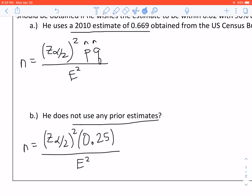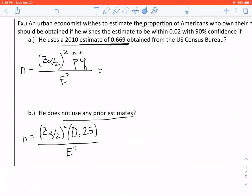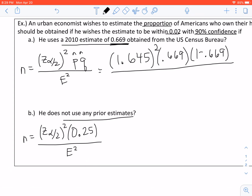Figuring out what these values are, your P hat value is given as 0.669. And your Q hat is found by doing 1 minus your P hat value. And Z alpha over 2, you need to look on page 2 of your chapter 7 notes. Since we are dealing with 90% confidence, we have Z alpha over 2 is 1.645 squared. P is 0.669. Q hat is 1 minus P hat. And then divided by E, which is our margin of error, which it says within 0.02 squared.